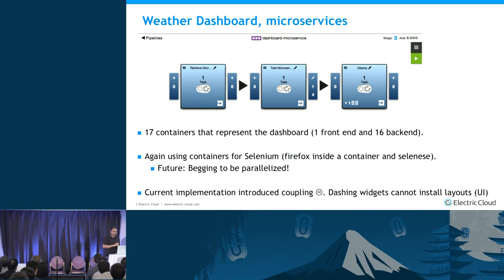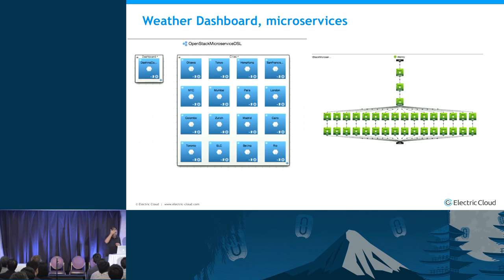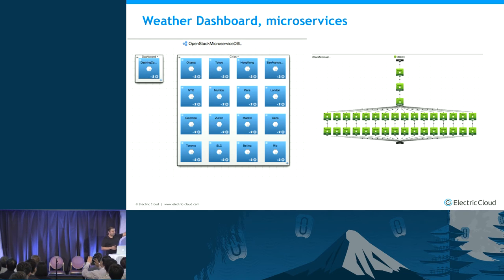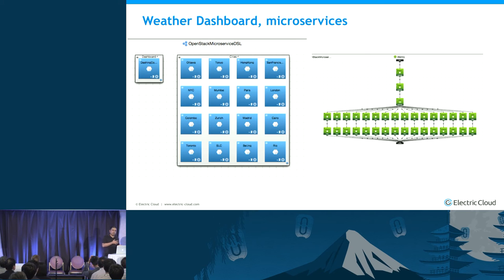One caveat: in this implementation I introduced a little bit of coupling. Dashing, at least out of the box, had no clean way for a microservice component to share UI. So there's a serialization at the top where I get the dashboard layout first. Then each of the 16 different widgets run. If something fails, that's okay — one widget doesn't show up. But if something happens at the very top, that's a problem. I think as people go from a monolith to a microservice, they'll run into this just as I did.